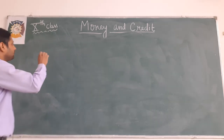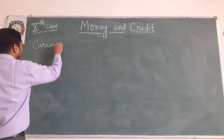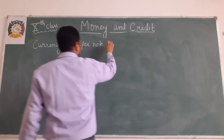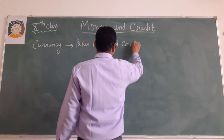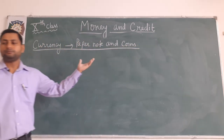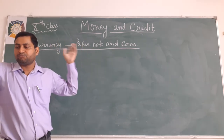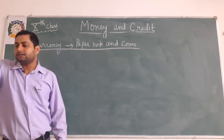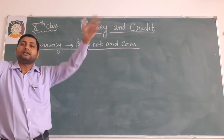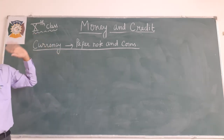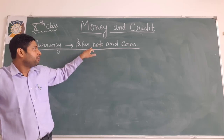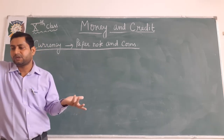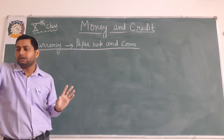Now let us understand how currency is used as a modern form of money. The modern form of currency includes two things: first, paper notes, and second, coins. Unlike things used as money earlier, modern currency is not made of precious metals such as gold, silver, and copper. Today's coins are made of stainless steel or a mixture of alloys.